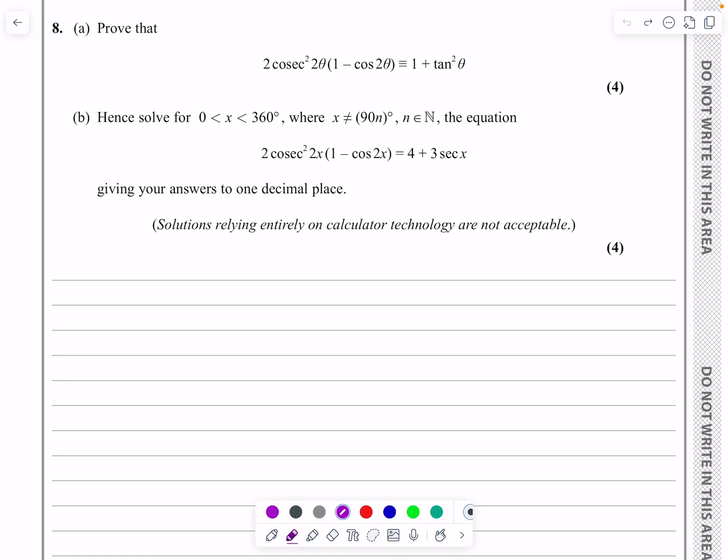Okay, this is the P3 paper from October 2023, question number 8, which is a proving trig identities and solving trig equations question. What I'm going to do is take a little bit longer than I would normally, so I'm just going to talk you through the process of trying to solve one of these equations.